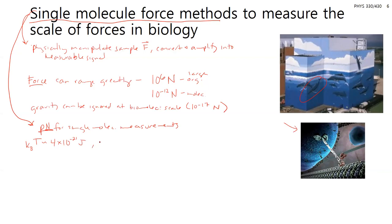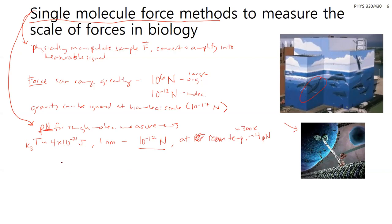We can approximate why it's piconewtons: k_BT is the energy range relevant in biology, about 4 times 10 to the negative 21 joules. At a molecular length scale of 1 nanometer, this gives 10 to the negative 12 newtons. At room temperature (~300 K), that's about 4 piconewtons. So 10 to the negative 12 newtons is the typical scale in biophysics.